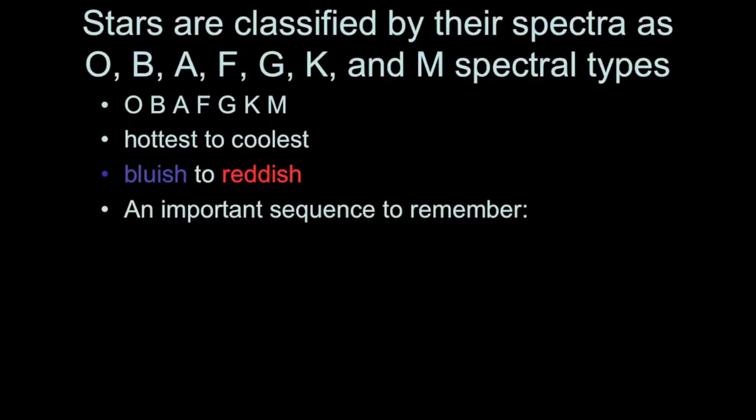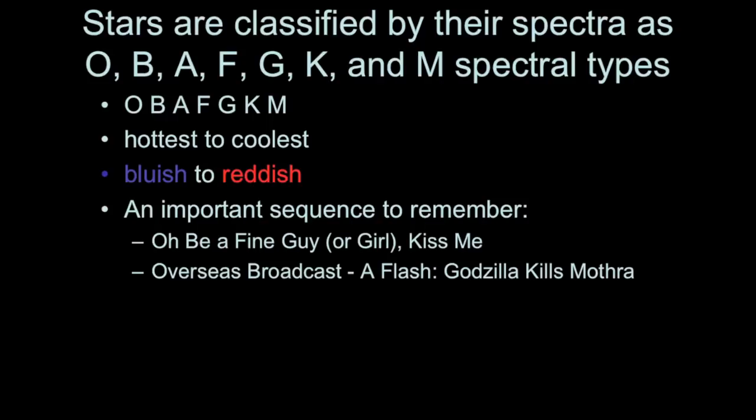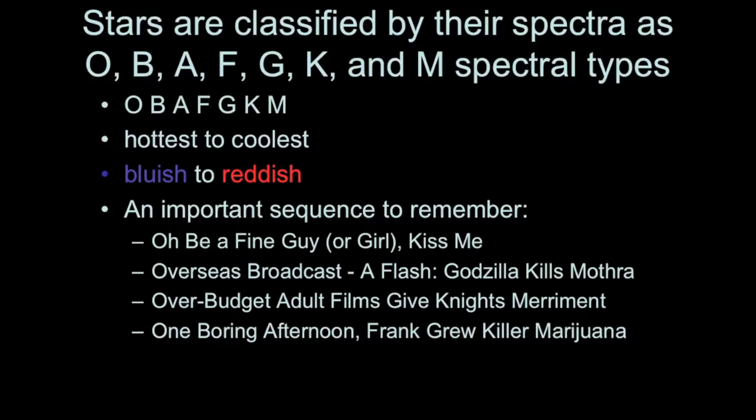It used to be that people would memorize the order of the spectral classes by using a mnemonic. However, there's a few other mnemonics that you might use. For example, overseas broadcast, a flash, Godzilla kills Mothra. Over budget adult films give nights merriment. Or, one boring afternoon, Frank grew killer marijuana. I'm not endorsing any of these practices, but mnemonics are most effective when they're funny and memorable. And so, use whatever mnemonic you like, but you'll need to know that the order of the spectral types goes from O-B-A-F-G-K-M.